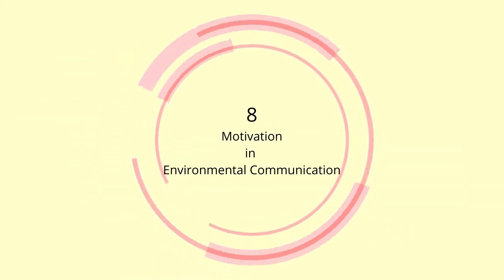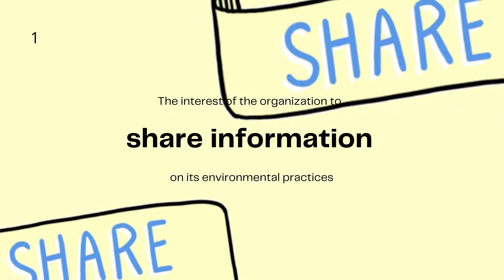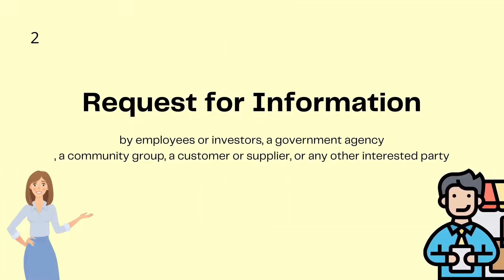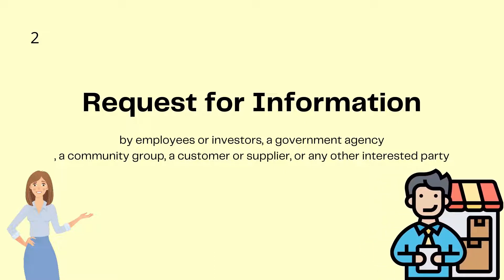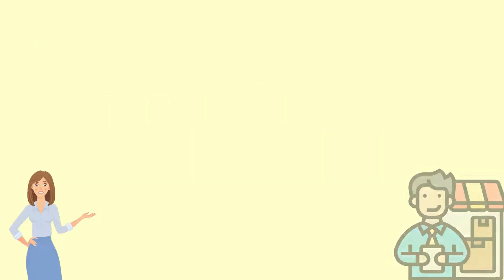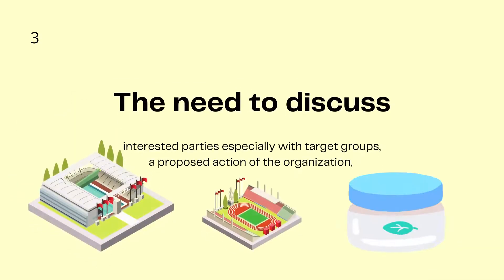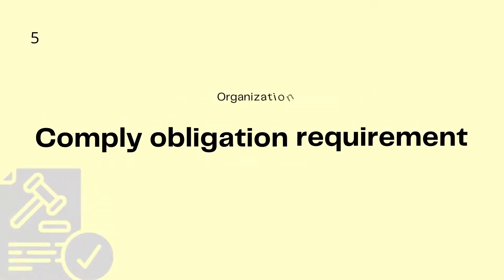There are eight motivations that fuel the need and want of an organization to communicate their environmental values, actions, and performance. One motivation is the organization's interest in sharing information on its environmental practices, or responding to requests for information by employees, investors, a government agency, a community group, a customer, a supplier, or any other interested party. Another motivation is the need to discuss with interested parties, especially target groups, a proposed action such as expansion of an existing facility, siting of a new facility, or introduction of a new product. A third motivation is to obtain and communicate information through environmental risk management.